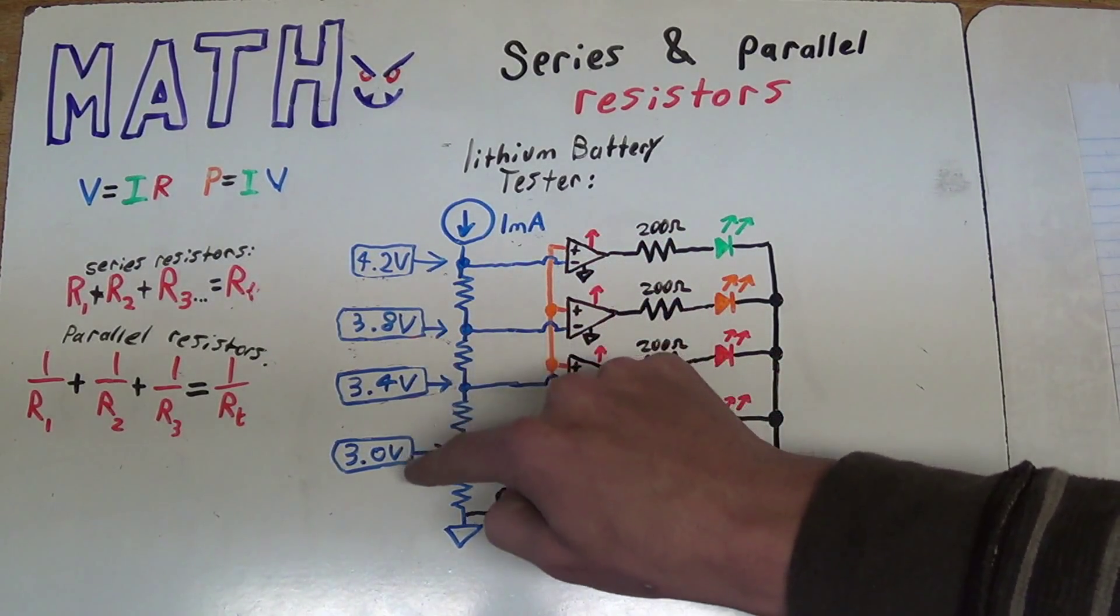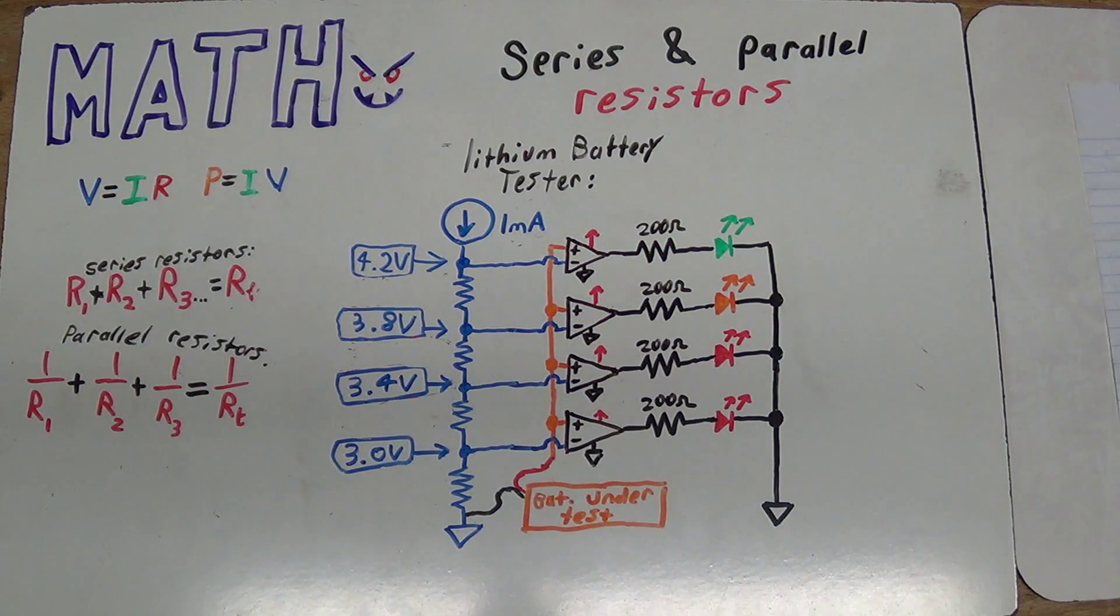And the same goes for 3.4 volts in this LED, 3.8 volts in this LED, and 4.2 volts in this LED. Now in order to get these reference voltages perfect, I had to do a lot of tuning and playing around with resistor values, and also a lot of math and calculations to figure out what the resistors are supposed to be. So here's how I went about doing it.